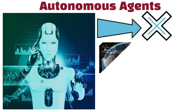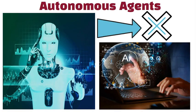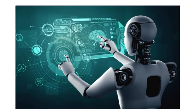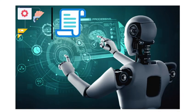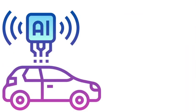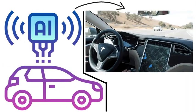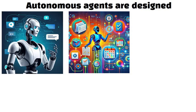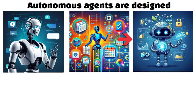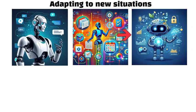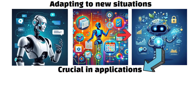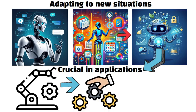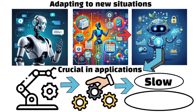Autonomous agents operate independently without needing constant human guidance. They are capable of making decisions on their own, based on the rules and learning processes embedded in them. Consider a self-driving car that navigates busy streets without direct human control. Autonomous agents are designed to assess their environment, plan actions, and execute those actions while adapting to new situations. Their independence is crucial in applications like robotics, where human intervention might be too slow or impractical.